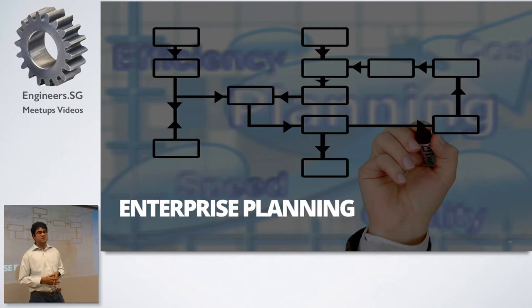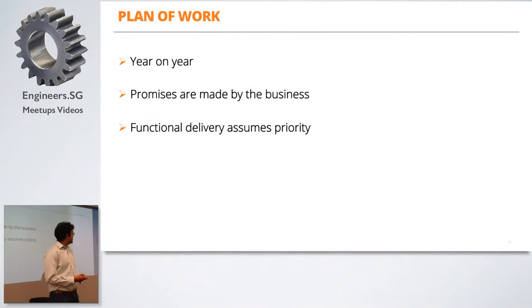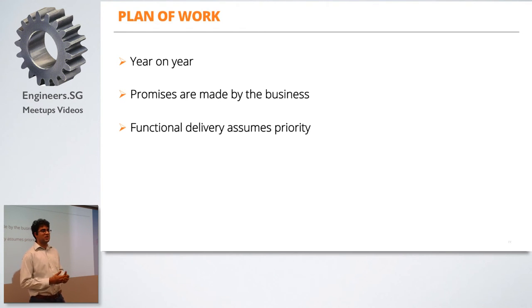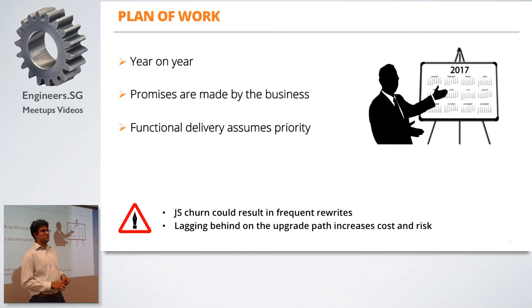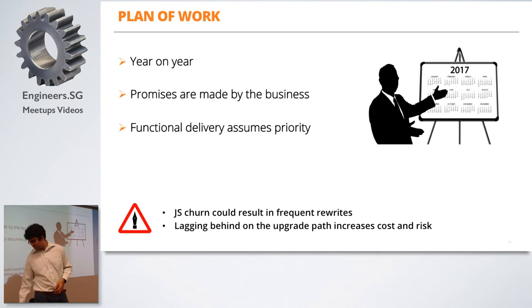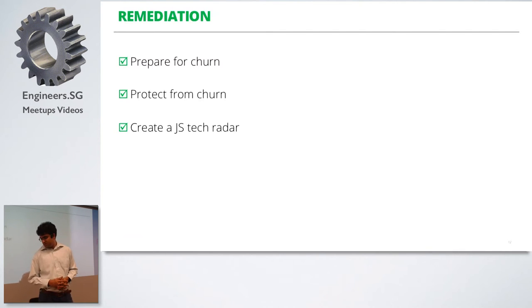The next thing is enterprise planning. Enterprises tend to budget year-on-year and plan for a year's worth of work. Once this is done, promises are made by the business to their customers — there is no going back. And everyone knows functional delivery assumes priority. The JS churn could result in frequent rewrites, which is very risky for an enterprise and increases a tremendous amount of cost. To avoid that, you end up lagging behind on an upgrade path, which only delays the whole problem.